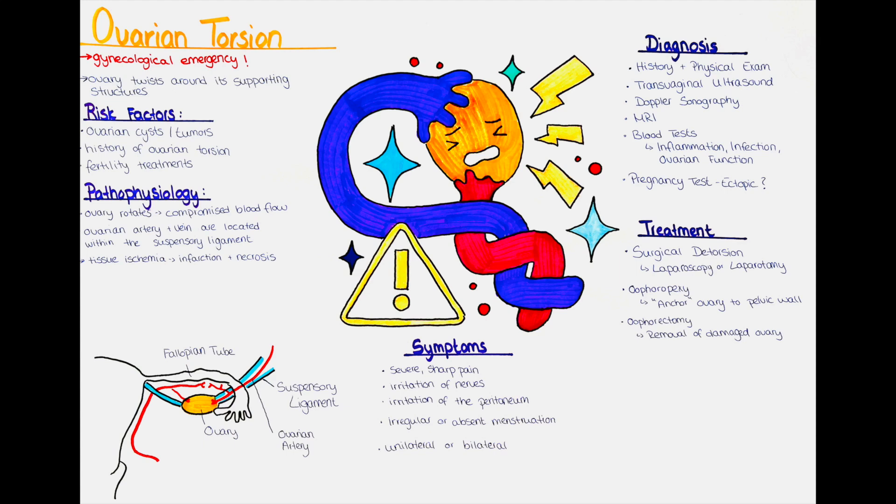A history of previous ovarian torsion also increases the risk of reoccurrence. The risk of ovarian torsion may be slightly increased during pregnancy. Certain fertility treatments, such as in vitro fertilization, can increase the risk of ovarian torsion.